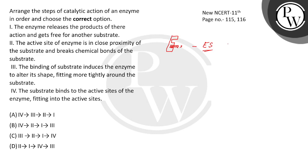In the third step, the active site of the enzyme is in close proximity of the substrate and breaks the chemical bonds of the substrate, and new product-enzyme complexes form. The substrate bond breaks with the enzyme, and the enzyme will become a product complex.